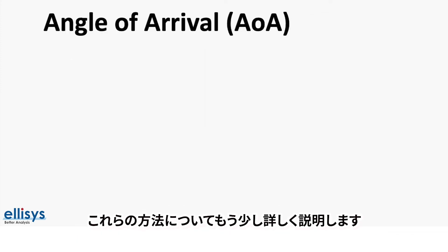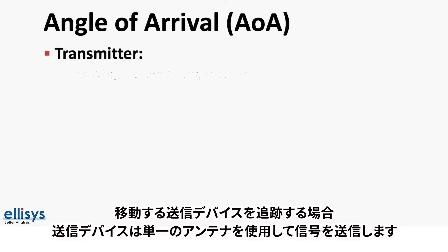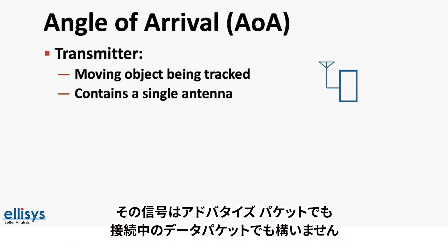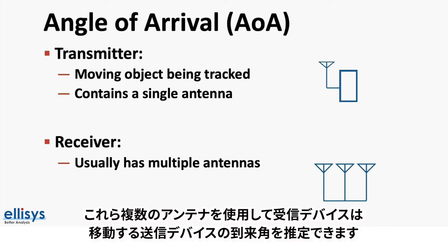Angle of arrival is usually used in a system comprising a moving transmitter device that we need to track. The transmitter device uses a single antenna to transmit signals, whether advertising packets or data packets during a connection. The receiver, on the other hand, is usually equipped with an array of multiple antennas. Using these antennas, the receiver is able to estimate the angle of arrival of the signal being transmitted by the moving device.